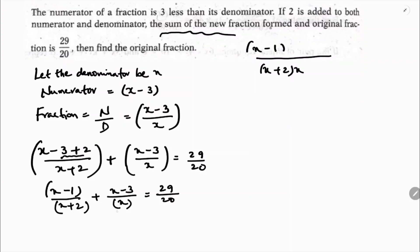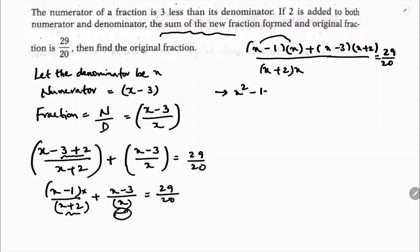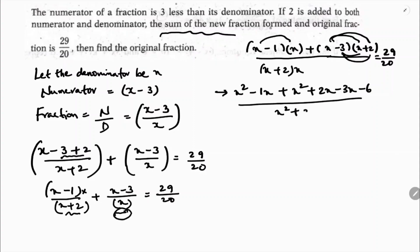So x minus 1 — this x I will multiply here — into x, plus x minus 3 into x plus 2, because in the first fraction the denominator is x plus 2, so x plus 2 I will multiply here. That equals 29 by 20. Now: x times x minus 1 gives x squared minus x; x times x minus 3 gives x squared plus 2x; with minus 3 times x plus 2 gives minus 3x minus 6. So the numerator over x squared plus 2x equals 29 by 20.